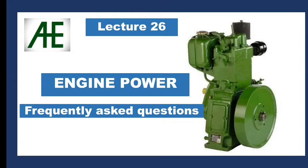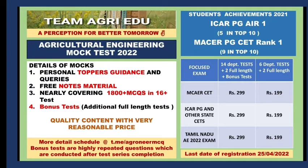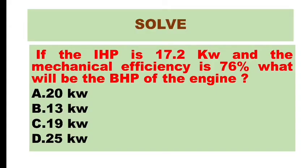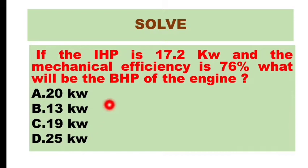Hello guys, welcome to today's lecture. In today's lecture we will discuss engine power, various engine terminologies, solve some problems, and see how power at different points is measured in the engine. Before starting, we will solve this problem: if the IHP is 17.2 kilowatt and the mechanical efficiency is 76%, what will be the BHP of the engine? We will see what IHP, BHP, and mechanical efficiency are and how they are interrelated.